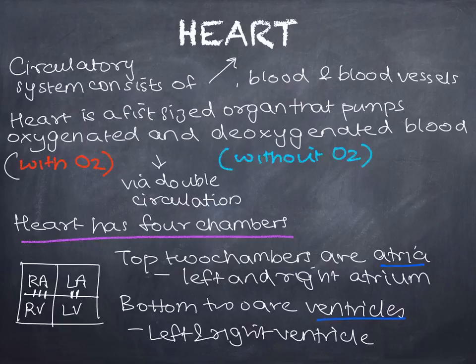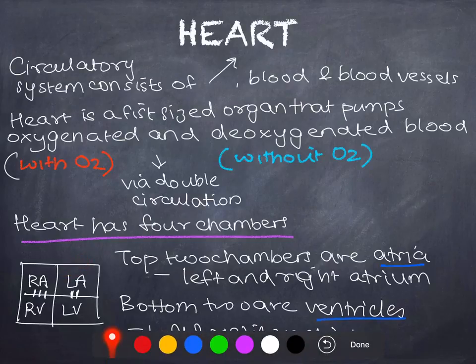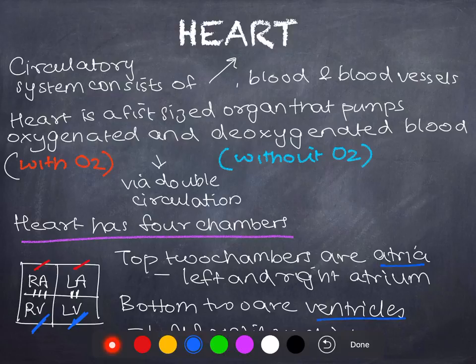Via double circulation, the heart can pump oxygenated blood to the other parts of the body and deoxygenated blood to the lungs. The heart has four chambers. The top two chambers are known as atria — each one is called an atrium — specifically the left atrium and right atrium. The bottom two chambers are known as ventricles: the left ventricle and right ventricle.